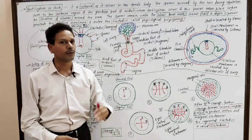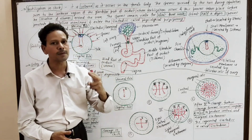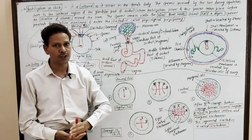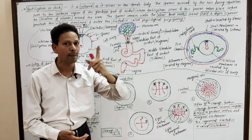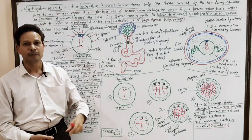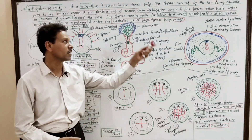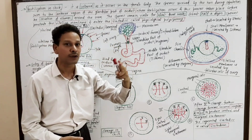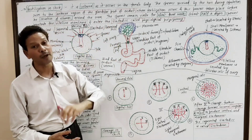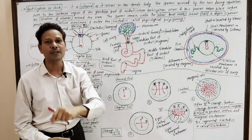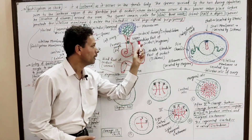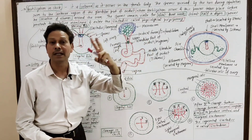In our last lecture, we discussed the structure of spermatozoa and structure of ovum. In case of fertilization, the fusion of gametes — the fusion of sperm and ovum — takes place. This process of fertilization in case of chick, in case of birds, in case of hen, is internal, as it occurs inside the female body. The specific site of fertilization in case of hen is this upper glandular part of the oviduct — it is the magnum.